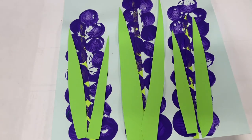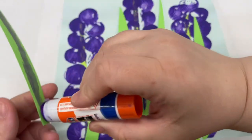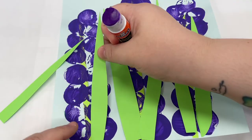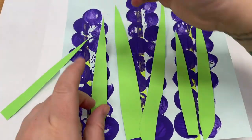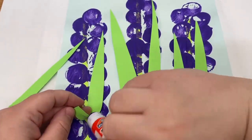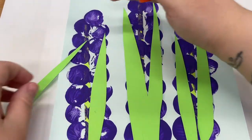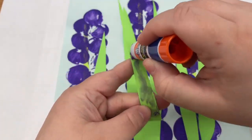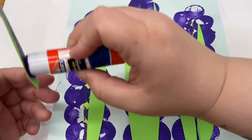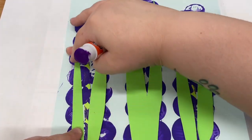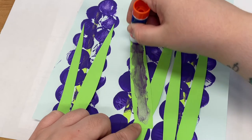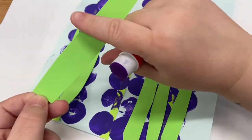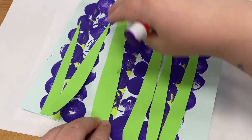Once I have all my leaves, I'm going to take my glue stick and then I'm going to glue them on. I like to make sure I put a lot of glue just to kind of help them stick, especially over the paint. Sometimes that could be a little tricky.